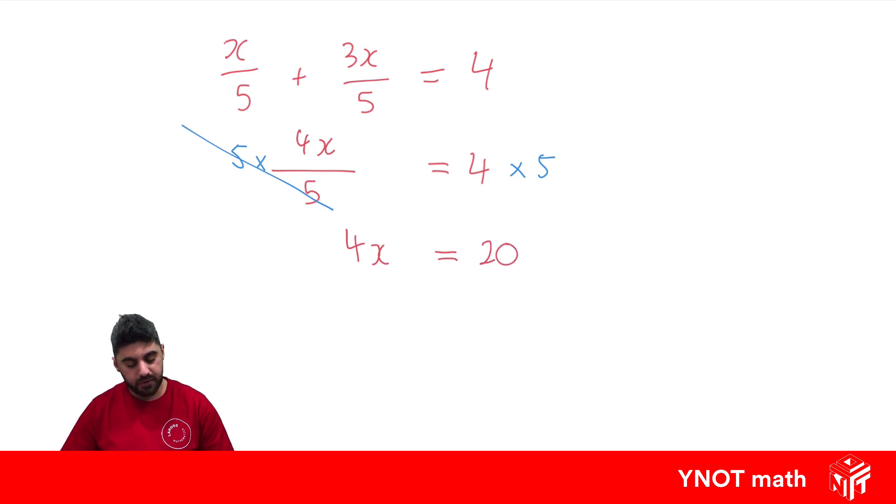Now we can finally get rid of that 4 by dividing both sides by 4 because 4x means 4 times x. 4 divided by 4 is 1, and we're just left with the x. x equals 20 divided by 4. So that's 5.